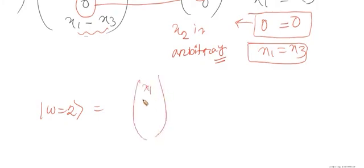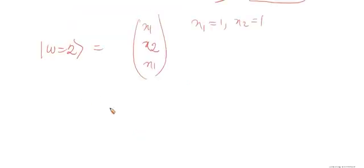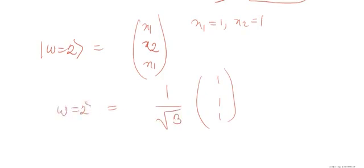The eigenvector for omega = 2 is [x1, x2, x1], where x2 is arbitrary and x1 = x3. Taking x1 = 1 and x2 = 1 for normalization gives the vector [1, 1, 1], and after normalizing: (1/sqrt(3)) * [1, 1, 1]. This is one valid eigenvector corresponding to omega = 2.